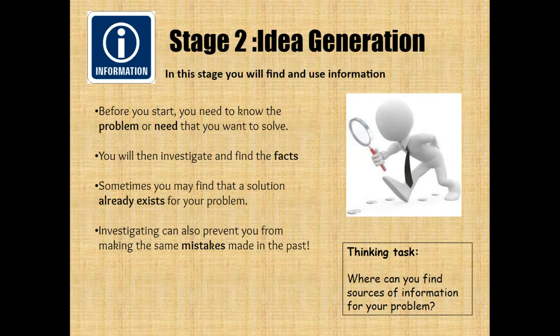Stage two is idea generation. In this stage you will find and use information. Before you start, you need to know the problem or need that you want to solve. You will then investigate and find the facts. You may find that a solution already exists for your problem — in those cases you can stop the engineering design process because the solution already exists.